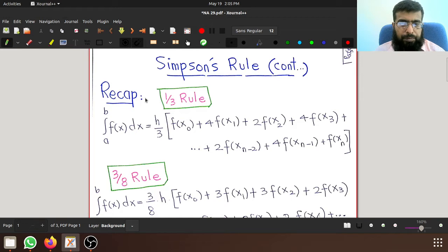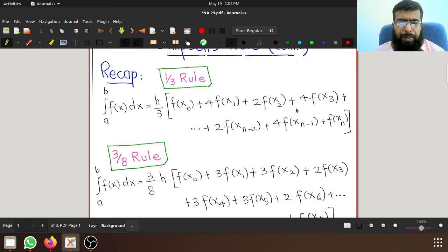Simpson's one-third rule is given by this formula where h is b minus a over n. We studied last time h over 3. The first and the last terms are multiplied by 1. The odd terms f of x1, f of x3, f of x5 are multiplied by 4.